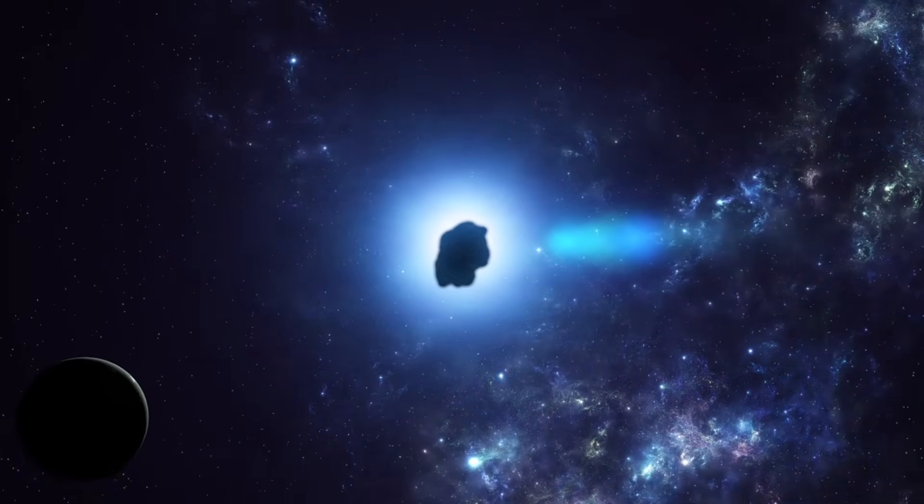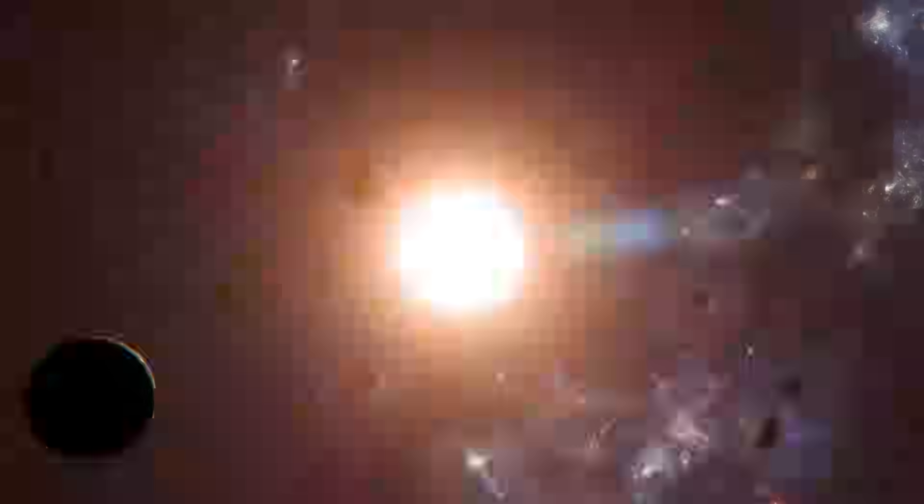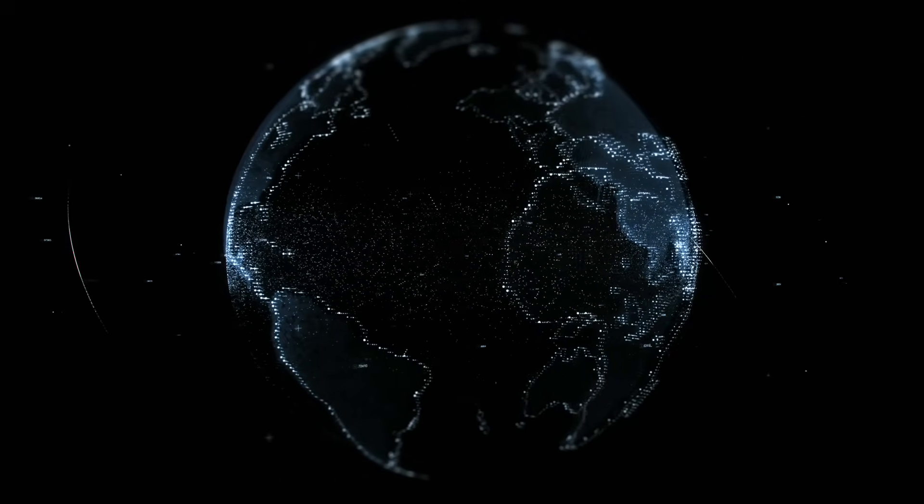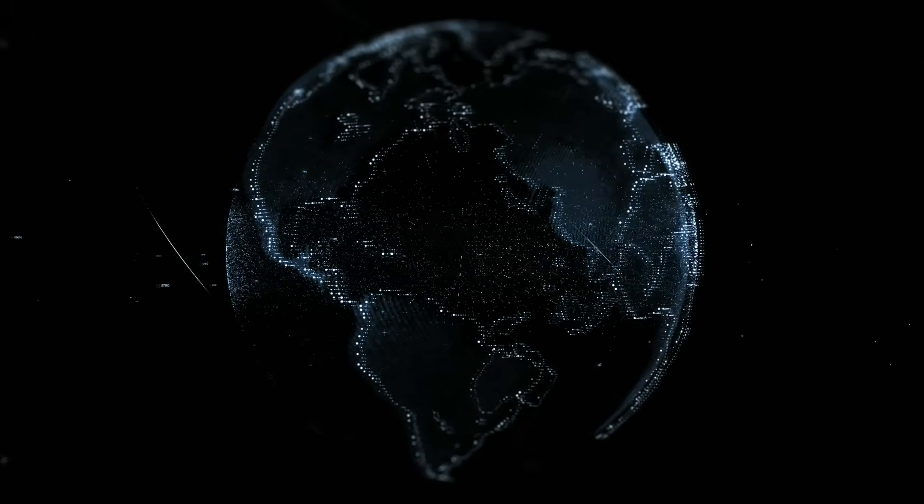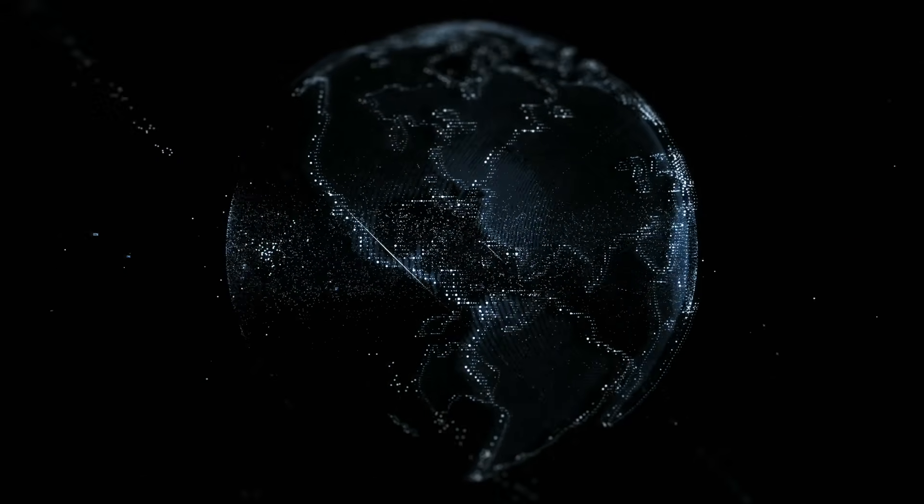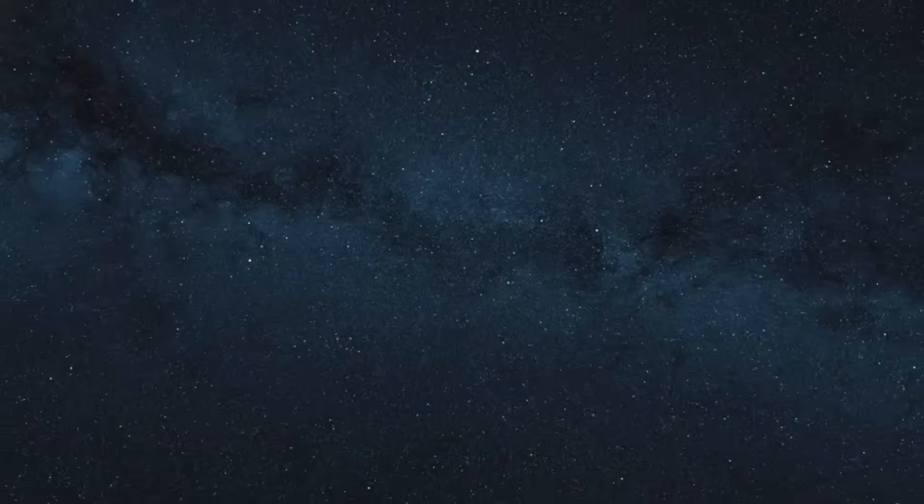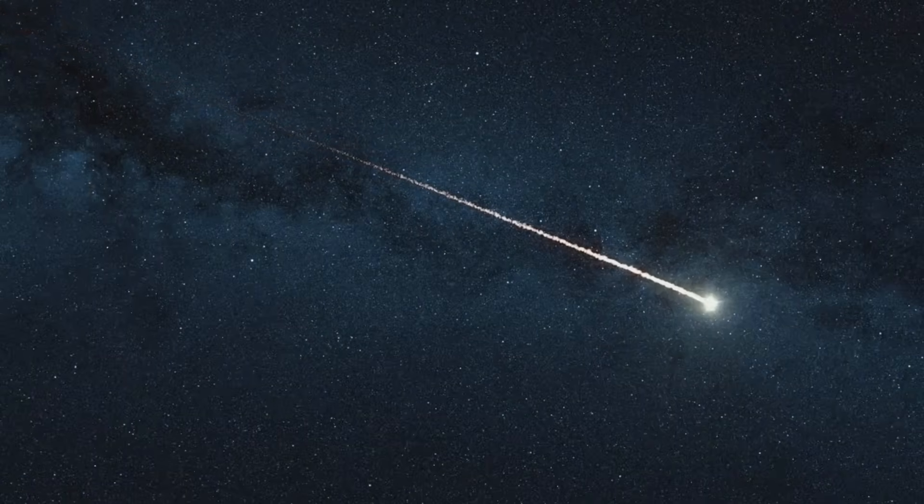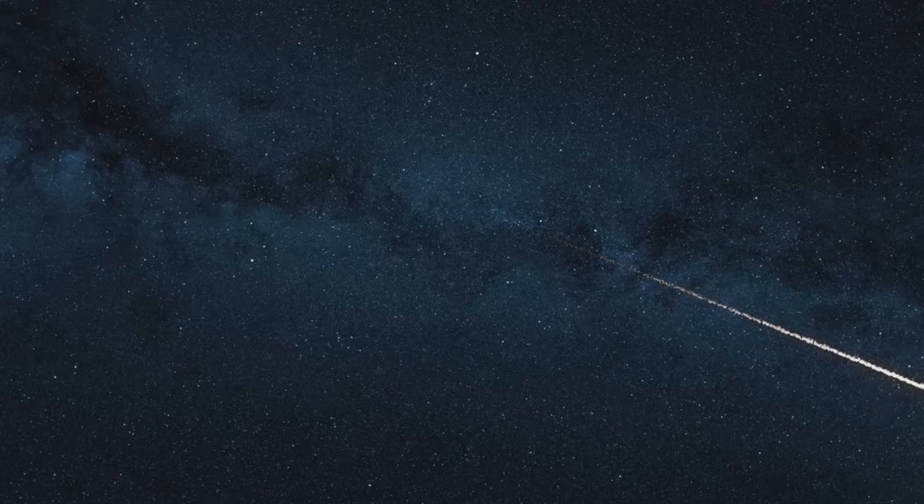3i Atlas reminds us that our solar system isn't an isolated island. We're part of a vast connected universe where objects and perhaps information flow between the stars. As telescopes track this fleeting visitor over the coming weeks, we're not just observing a comet. We're reading a message in a bottle that's been drifting through the cosmic ocean for longer than we can truly comprehend. And for this brief moment, it's ours to decipher.